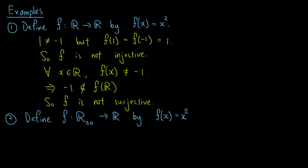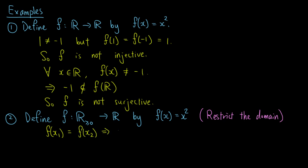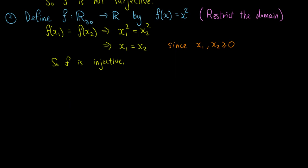Secondly, let's define f from the non-negative real numbers to the real numbers by f of x equals x squared. This means that we have restricted the domain in the first example. Now, f of x1 equals f of x2 implies that x1 squared equals x2 squared, which implies that x1 equals x2, since both x1 and x2 are non-negative. So f is injective, but f is not surjective, because again, negative 1 is not in the image of f.